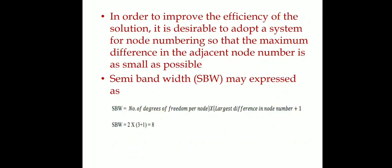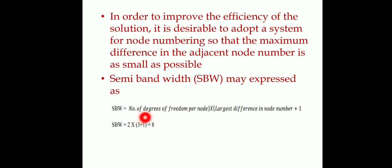The SBW equation is: number of degrees of freedom per node multiplied by the largest difference in node numbers plus 1. The number of degrees of freedom considers both x and y directions, so it is 2. The largest difference in node numbers is 3, so the result is 2 multiplied by 3 plus 1, giving a total of 8.